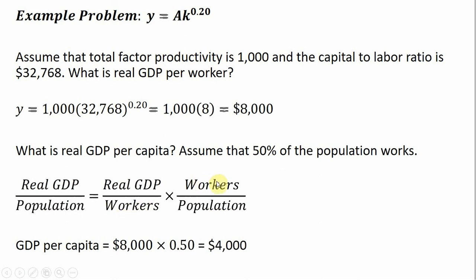Notice here on the right-hand side that we have workers in the numerator and workers in the denominator. So that just cancels to 1. And you've got real GDP per capita equals real GDP per capita. So this is really an identity here. But it's useful for looking at factors that will affect our standard of living, real GDP per person or per capita.